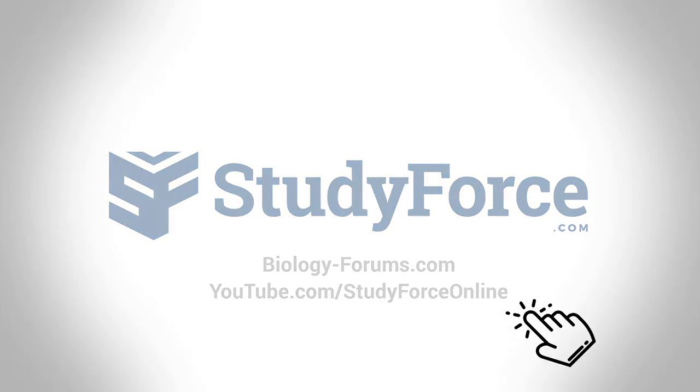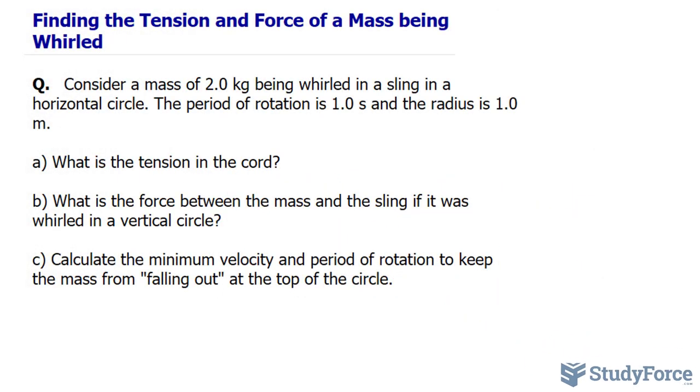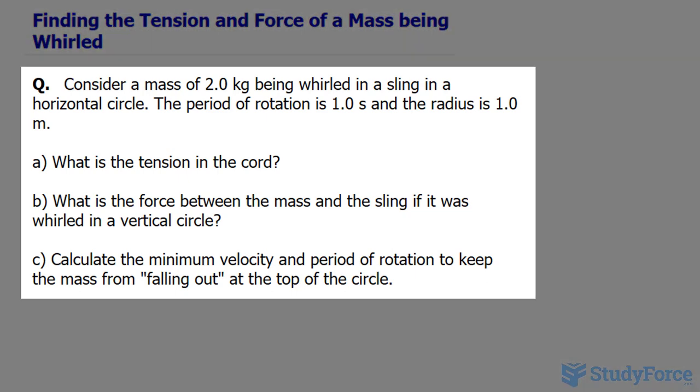In this tutorial, I'll show you how to find the tension and force of a mass going around in a circle. The question reads, consider a mass of 2.0 kilograms being whirled in a sling in a horizontal circle. The period of rotation is one second and the radius is one meter.